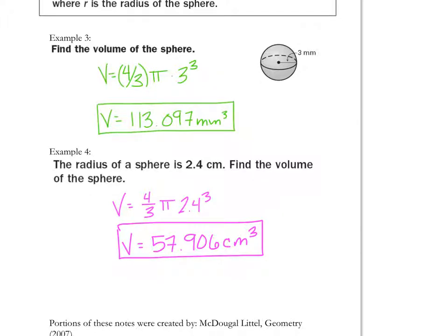And this is your final answer. 57.906. 2.4 is the radius. So, I plug that in. 4 thirds times pi times 2.4 to the power of 3. And I plug it in and I get 57.906 centimeters cubed.